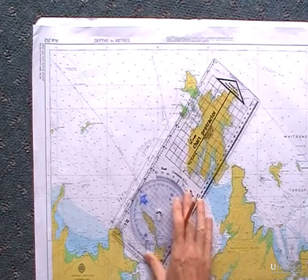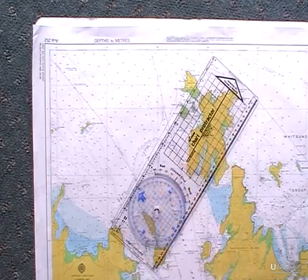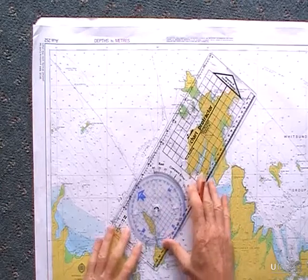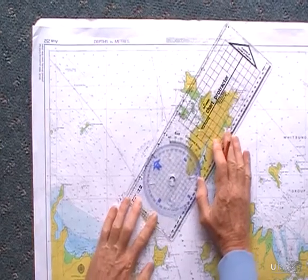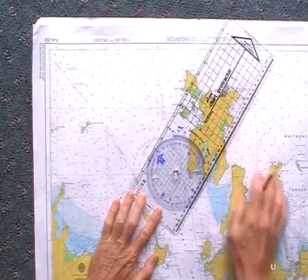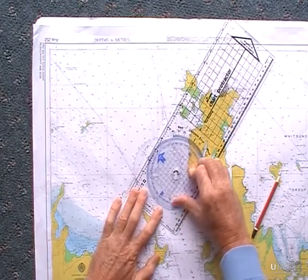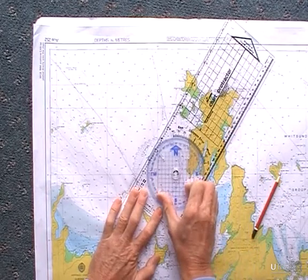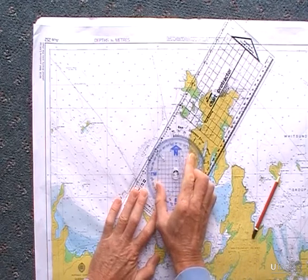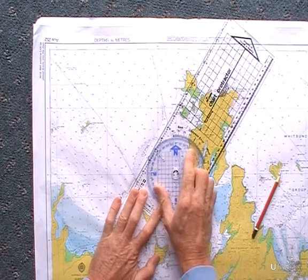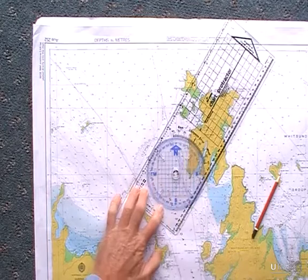To measure the heading, the angle of the heading that we would use to go along that course, you would then swing your protractor around so that the lines line up with the latitude or longitude lines on the chart.